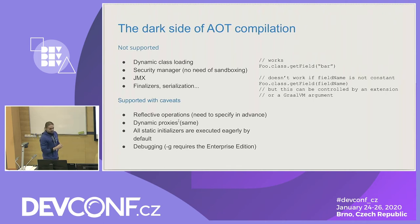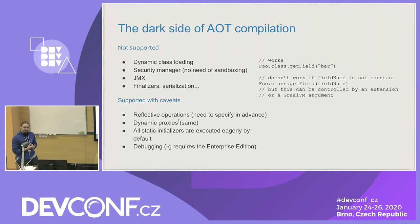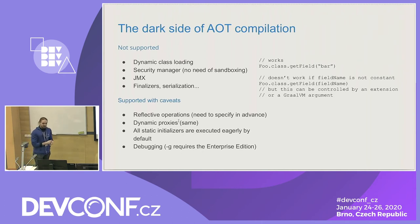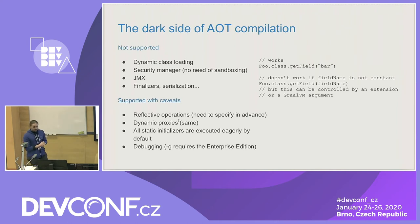One more thing is that all static initializers are executed eagerly, which obviously happens when you initialize your classes and serialize the result into a binary. If this causes problems in your application, you can control it — you can declare that some specific classes should be initialized at runtime, not at build time. Also, debugging can be a little bit problematic. If your application is no longer running as a regular JVM process, you can't use normal Java debuggers. If you want to include debugging symbols in your binary, you need the GraalVM Enterprise Edition.